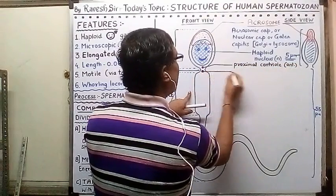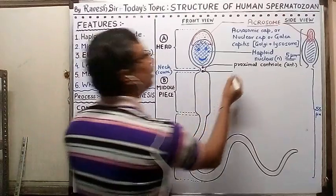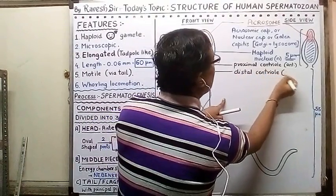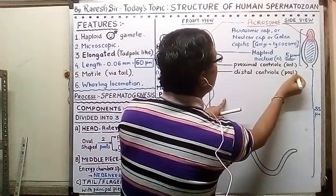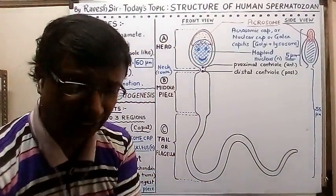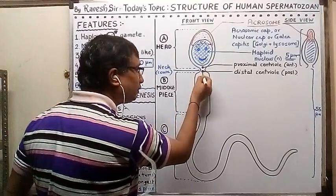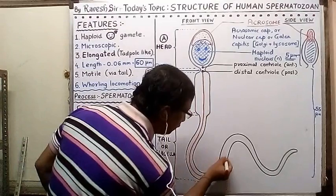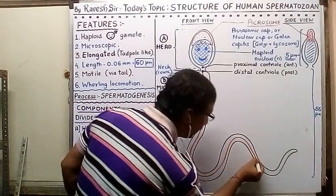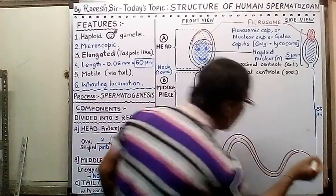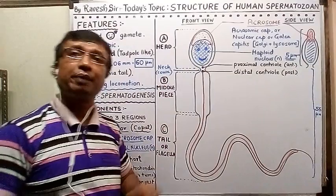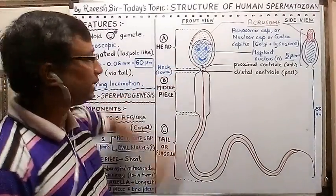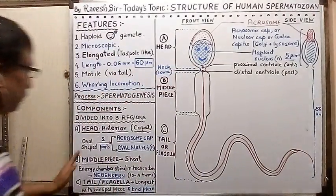Running along the length of the tail there is the axial filament. The last bare part of the axial filament is not protected by any cover — that is called the end piece. Now the middle piece itself is a short but important energy chamber.